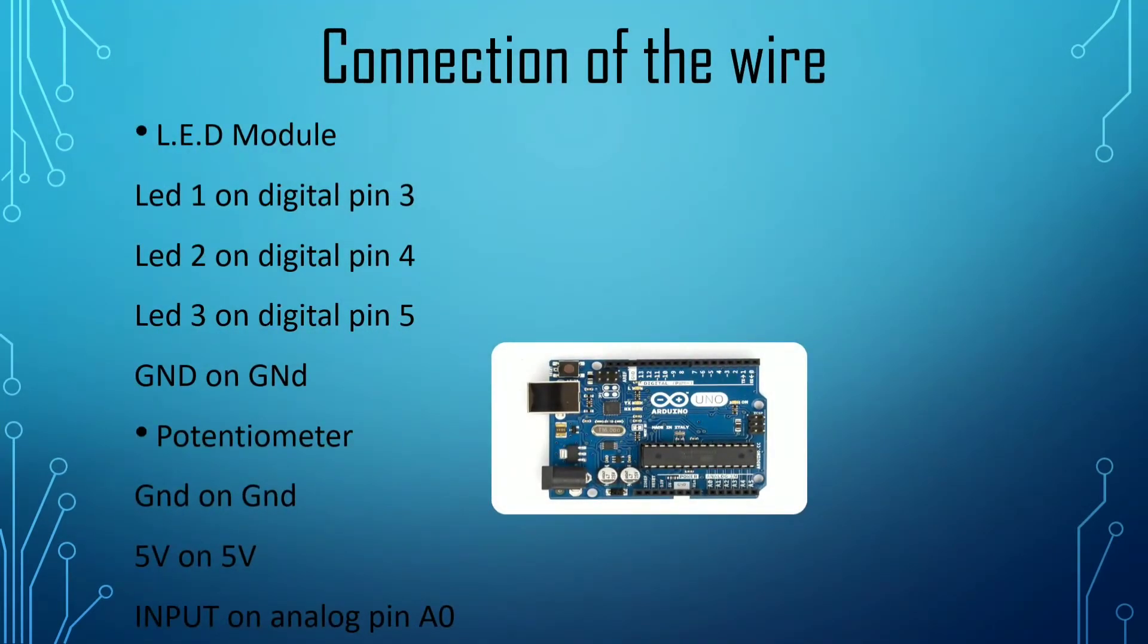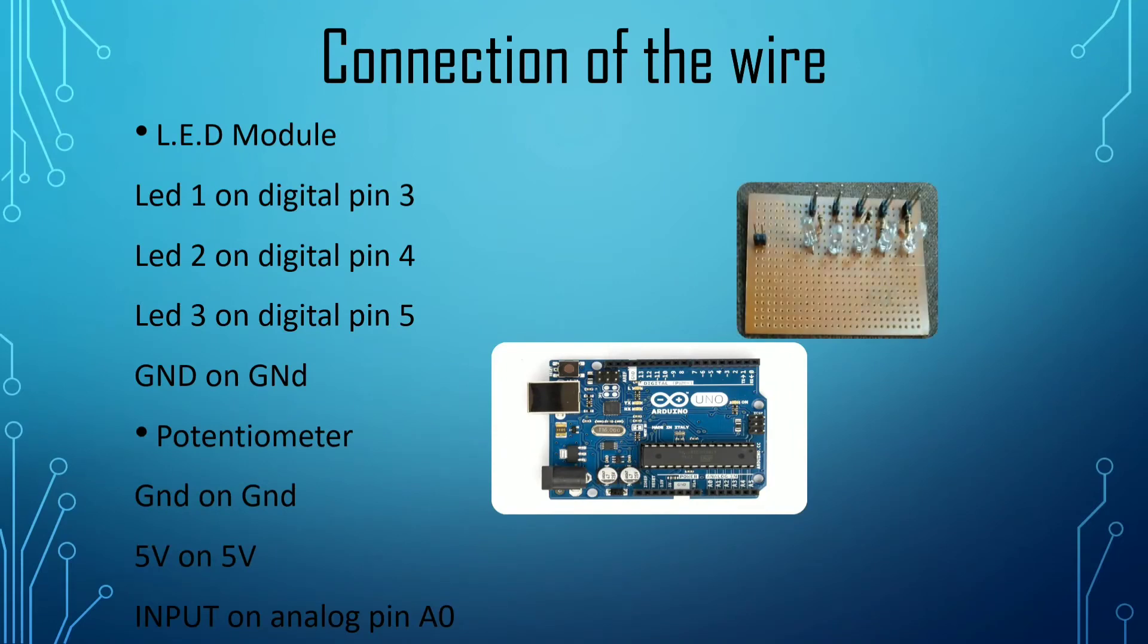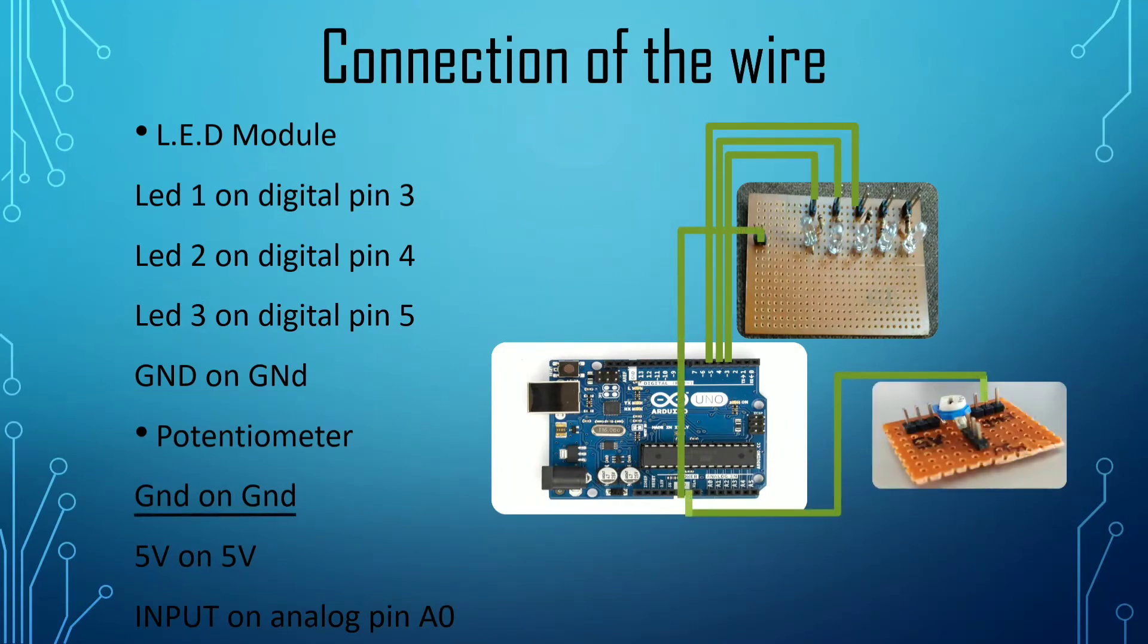Let us now discuss the connection of the wire. From LED module, LED 1 will be on digital pin 3, LED 2 will be on digital pin 4, LED 3 will be on digital pin 5. Ground pin will be on ground pin in Arduino. From potentiometer, ground pin will be on ground pin in Arduino, 5V will be on 5V, input will be on analog pin A0.